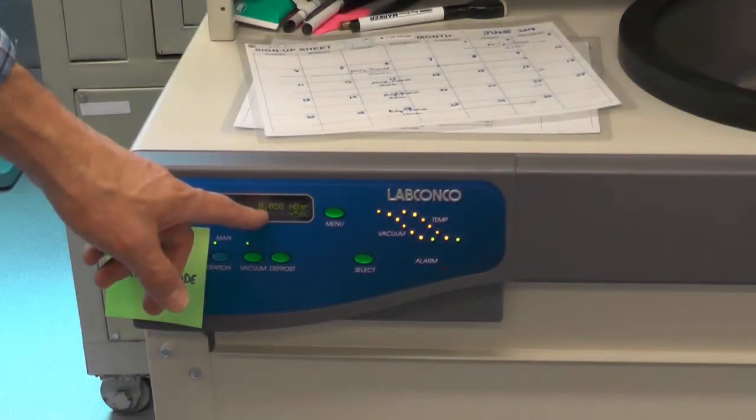When the vacuum display indicates about 0.05 millibars, the vacuum can be stopped and the samples can be checked. 0.03 to 0.02 millibars is the baseline.